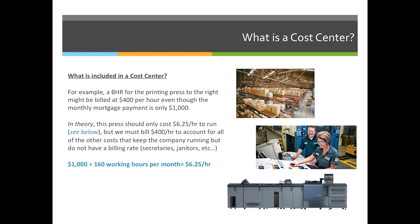For example, a BHR for the printing press might be billed at $400 per hour even though the monthly mortgage payment is only $1,000. In theory, this press should only cost $6.25 per hour to run — $1,000 divided by 160 hours per month equals $6.25 per hour — but that only covers the cost of the mortgage.